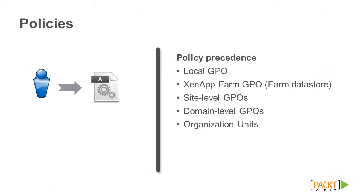Group policy settings are processed in the following order: local GPO, ZenApp farm GPO stored in the farm data store, site level GPOs, domain level GPOs, and organizational units.